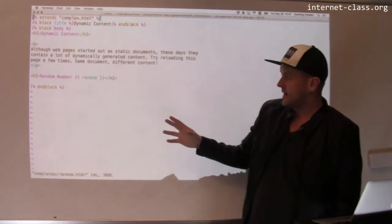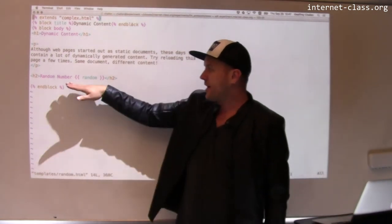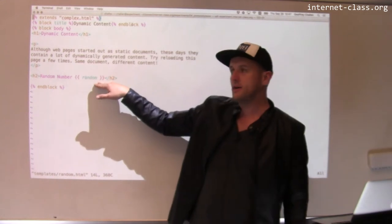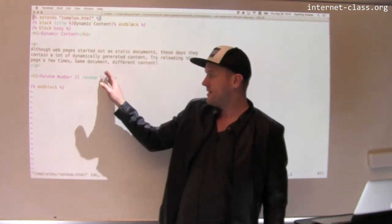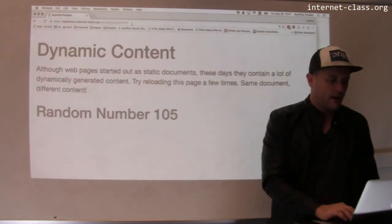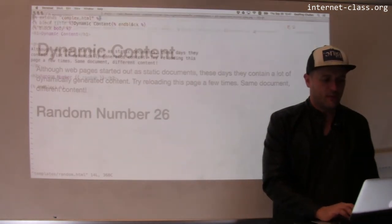And what this template tells the program to do is insert the value of the random number that was calculated by that function into this spot on the page. So random number. And this syntax says in this particular templating language, put the random number here. And you can see that that's what the page is doing. It's putting a random number there.